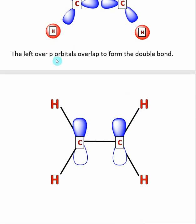Remember, we have leftover p orbitals that we have to utilize. Here, each carbon, in addition to the three sp² hybridized orbitals, has an unhybridized p orbital.